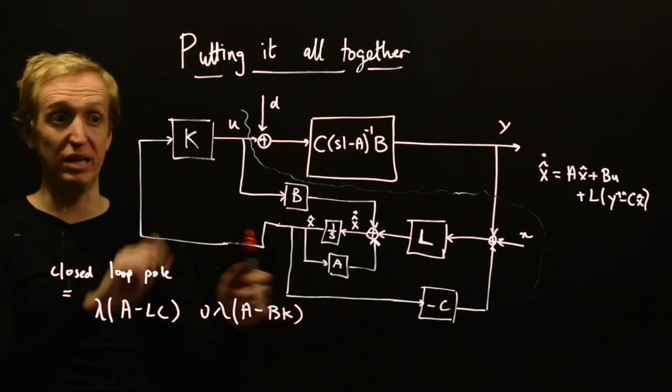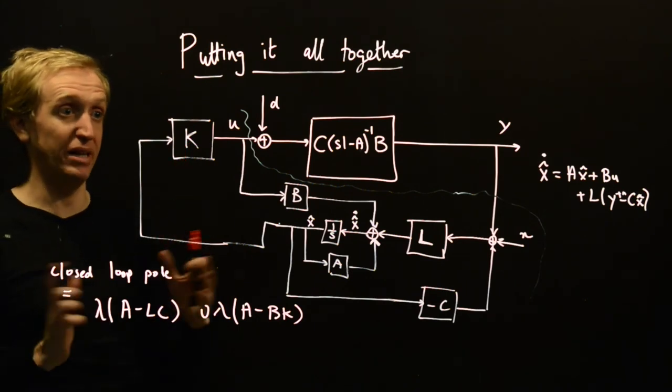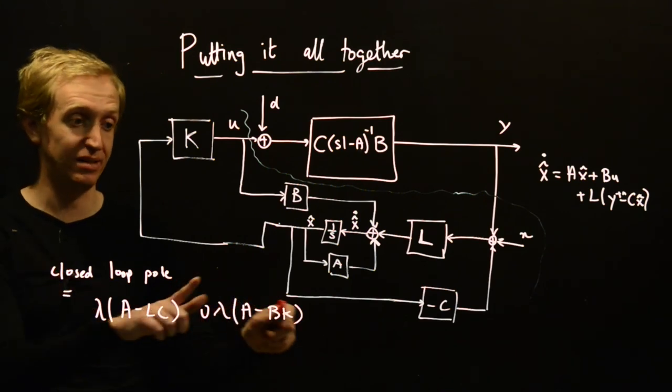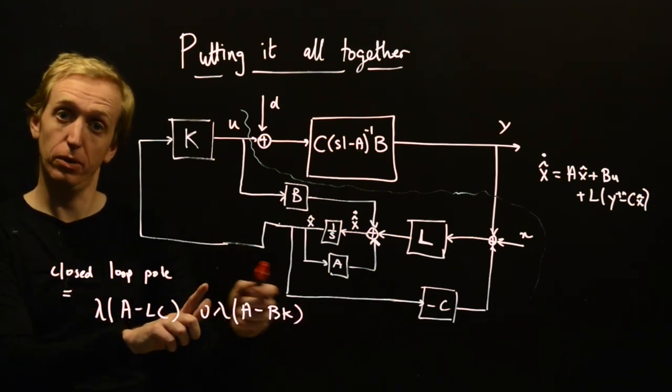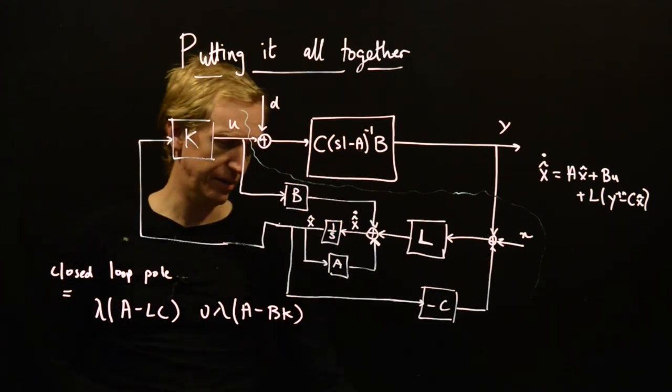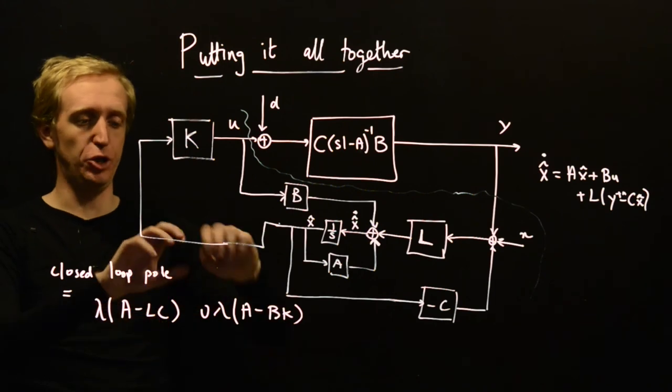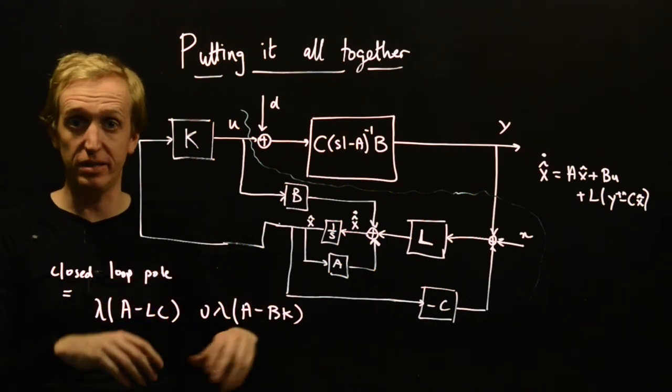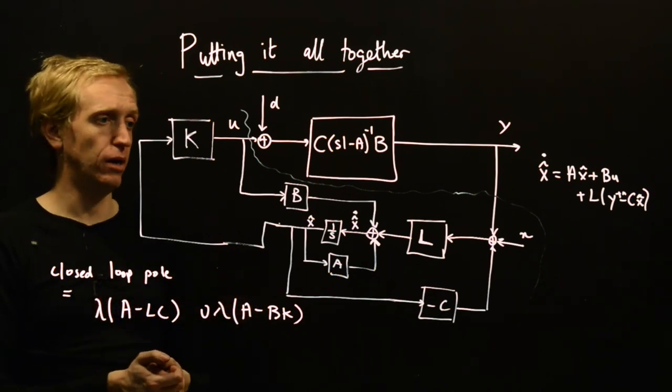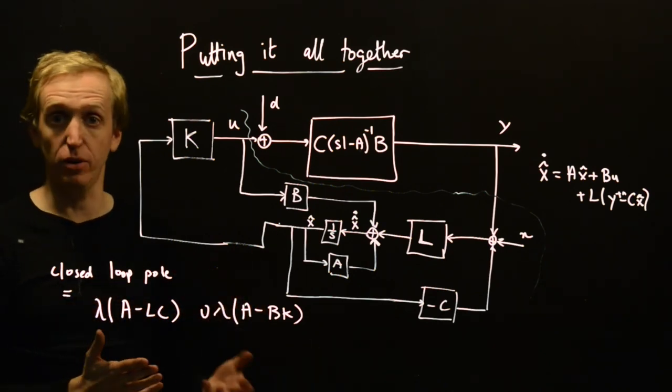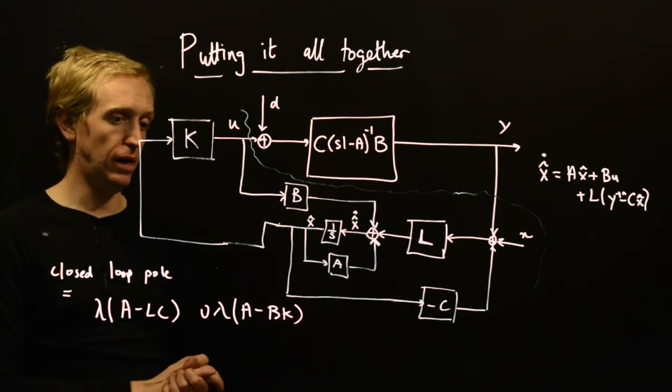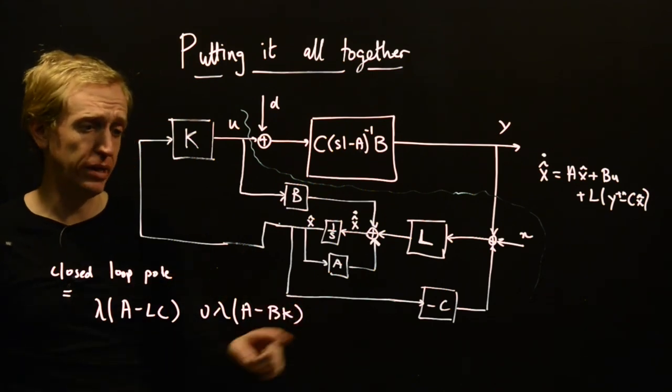So if you remember, when we designed our observer, we were placing these poles. When we designed our state feedback, we were placing these poles. And when we put the pieces together in this particular way, we end up with a closed loop system with closed loop poles given by the observer closed loop poles and the state feedback closed loop poles. So even though we designed them separately and we actually even designed the state feedback for something different—we designed it based on the true state, not the estimated state—but still in the closed loop, we end up with the closed loop poles that we designed for. This decomposition of the problem into these two pieces works for this pole placement, but it also works for all sorts of other optimal control problems.